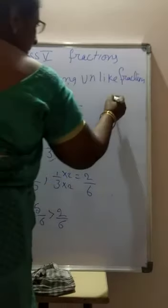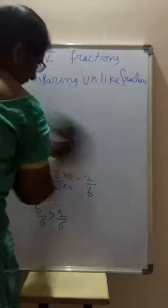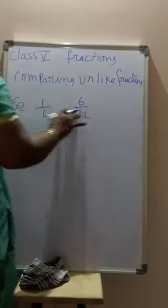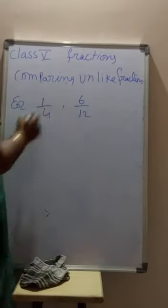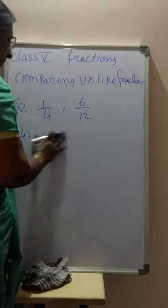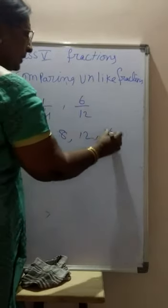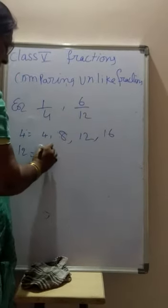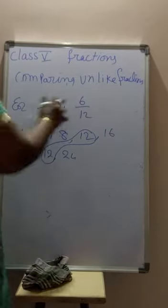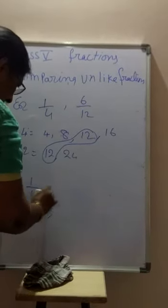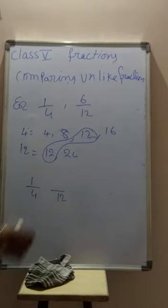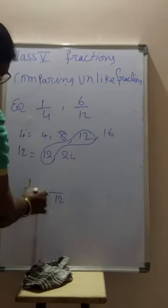Another example: 1 by 4 and 6 by 2. Now take multiples: 4, 8, 12... The LCM of 4 and 2 is 12. How many times is 4 multiplied to reach 12? 3 times.